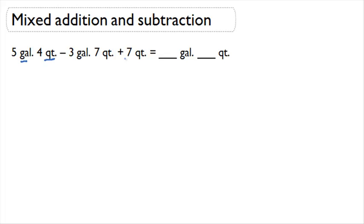So now we need to know the formula that relates gallons to quarts. This formula is 1 gallon is equal to 4 quarts.